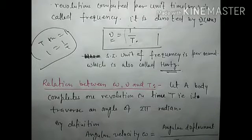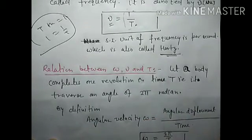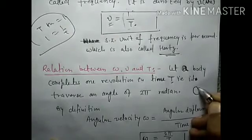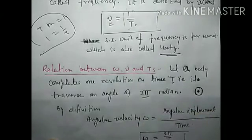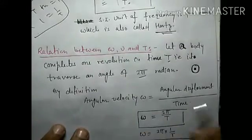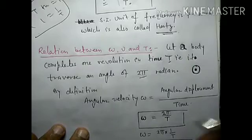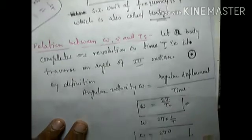अब relation between omega (angular velocity), frequency, and time period देखते हैं। Let a body complete one revolution in time T — that is the time period. In one revolution it travels an angle of 2π radians. So angular velocity ω = angular displacement / time = 2π / T.